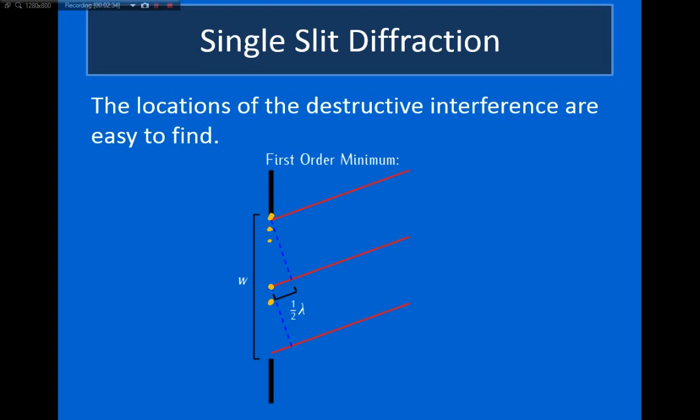We can do this point-wise for the entire top slit. So, for every point on the top of this slit, there is a point in the bottom half of the slit that will interfere destructively with this.